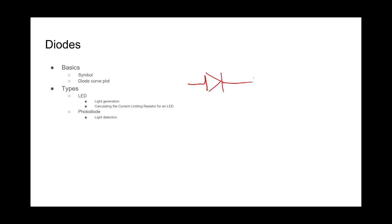Photodiodes are kind of the opposite of an LED. Instead of a current generating light, light impacting a photodiode generates a current. What's interesting is that current goes in reverse — it's a reverse bias. These are often used for light detection. The current always flows in a normal diode from anode to cathode. In a photodiode, however, it flows from the cathode to the anode when light strikes it.